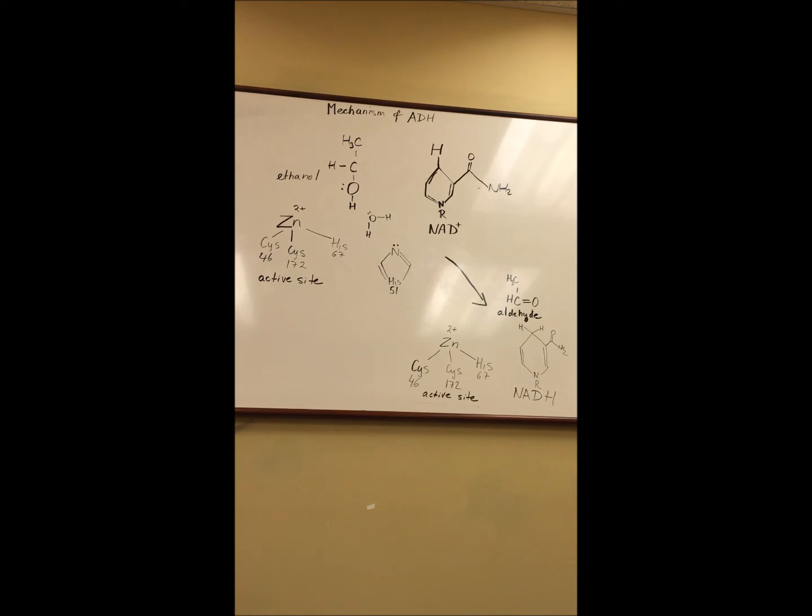Ethanol binds to zinc at the active site of alcohol dehydrogenase. This causes the oxygen on the OH group of the ethanol to become more stable, leading to the hydrogen on the OH group becoming more acidic.